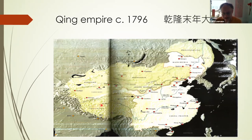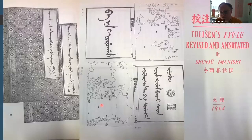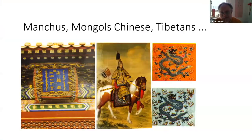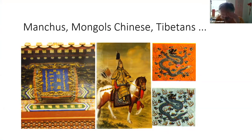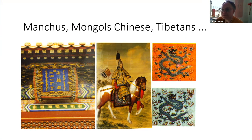This is why Tibet plays such an important role. Here you can see dragons in different colors — these colors adorn the banners, literally the flags of the eight groups that Nurhachi created.